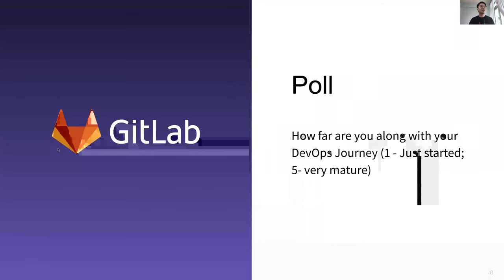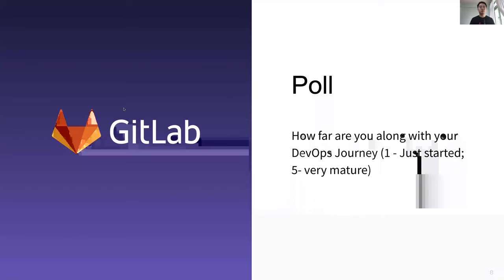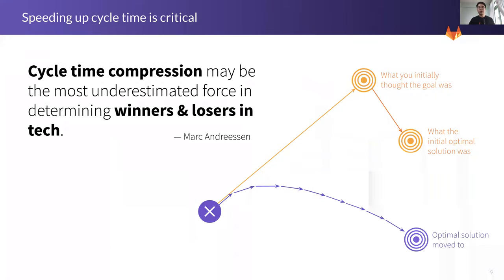Most people, as I can see, are within the earlier stages from one to three, which is great. I hope this session can be informational about how we see it here at GitLab. So, in 2011, Marc Andreessen — former founder of Netscape — mentioned: 'Cycle time compression may be the most underestimated force in determining winners and losers in tech.' What this means is: the quicker you get feedback from your users and your tests, the faster you know you're off track, resulting in less time, less money, and less effort wasted.